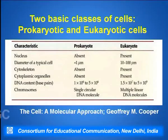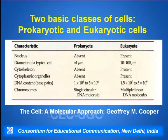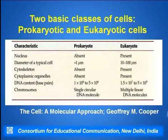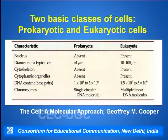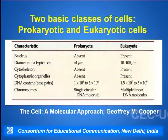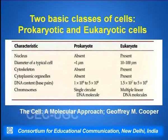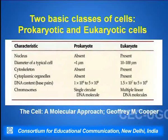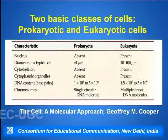There are two basic classes of cells: one is called the prokaryotic system, the other is called the eukaryotic system. There are certain differences between prokaryotes and eukaryotes. In the prokaryotes, the nucleus is absent, while in the eukaryotes the nucleus is present. The diameter of the prokaryotes and the eukaryotes also varies, while the cytoskeleton is absent in prokaryotes but present in the eukaryotic system.